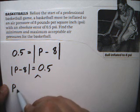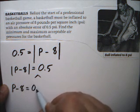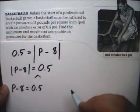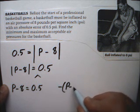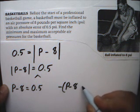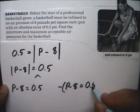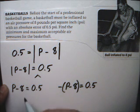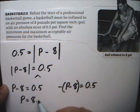One case is positive: p minus 8 is equal to 0.5. And the other case is negative: p minus 8 is equal to negative 0.5. Solving the positive case by adding 8 to both sides, I get p is equal to 8.5.